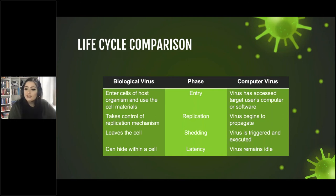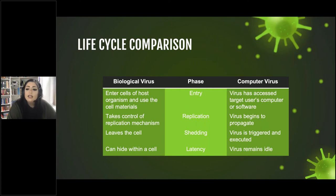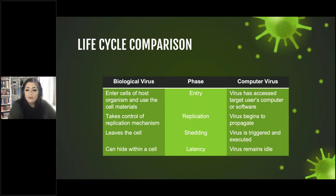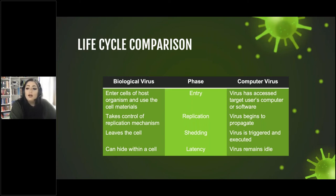Now we can compare the life cycles. During the entry phase, the biological virus enters cells of the host organism and uses the cell material; similarly, a computer virus gains access to a target user's computer or software. During replication, they both take control of the replication mechanism and begin to propagate. During the shedding phase, the biological virus leaves the cell or host, while the computer virus is triggered and executed, potentially spreading. Finally, they both have latency periods where the virus can remain idle or hidden.